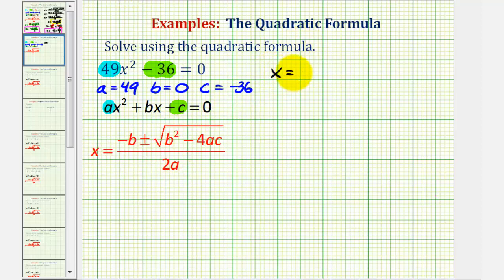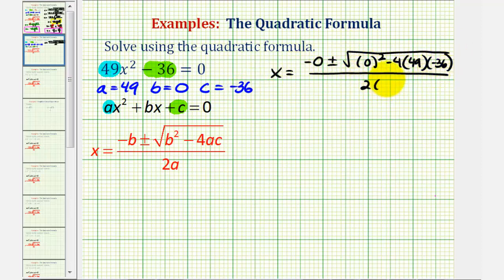So we'll have x equals negative b, that's going to be negative zero, plus or minus the square root of b squared, that's zero squared, minus four times a, which is 49, times c, which is negative 36, divided by two times a, or two times 49.